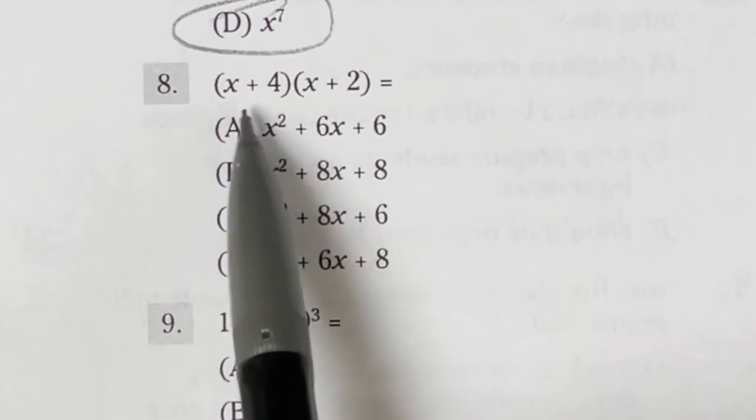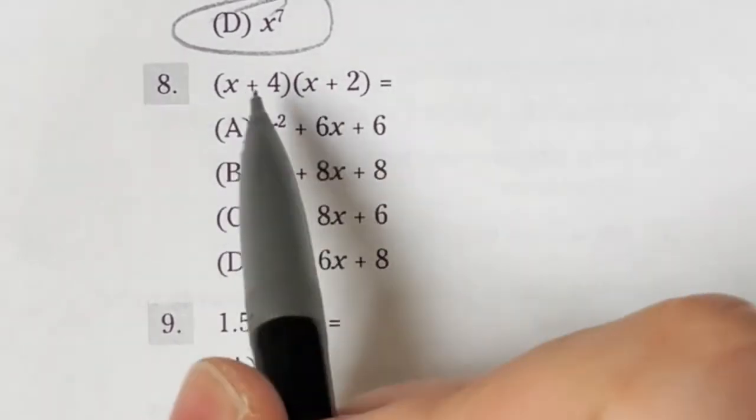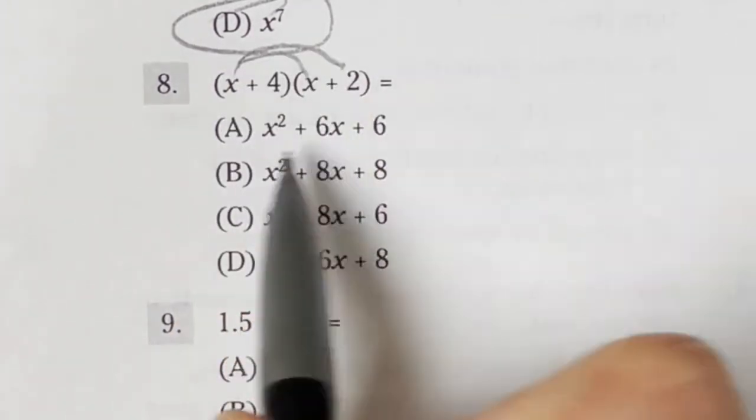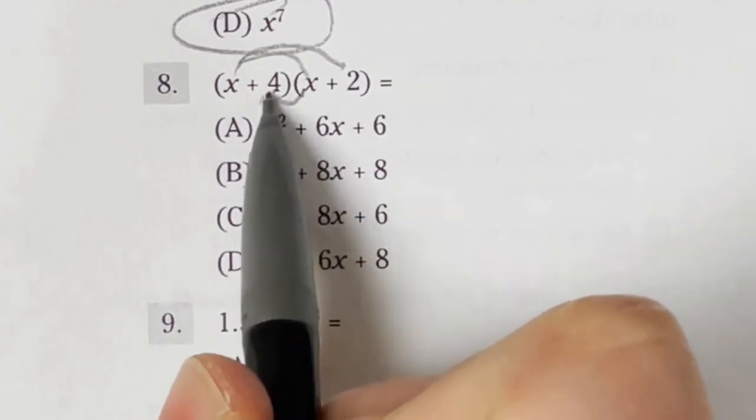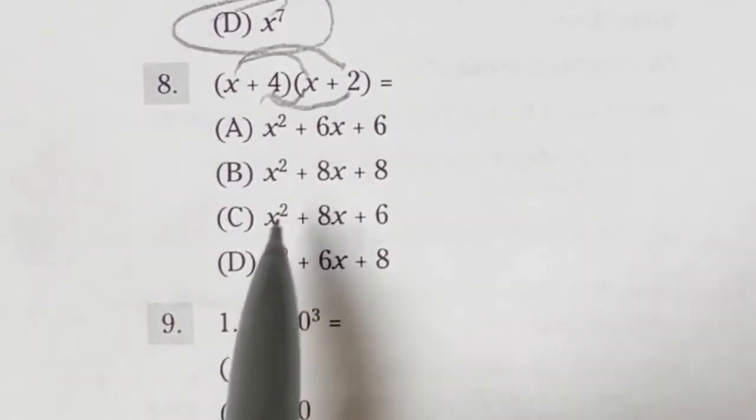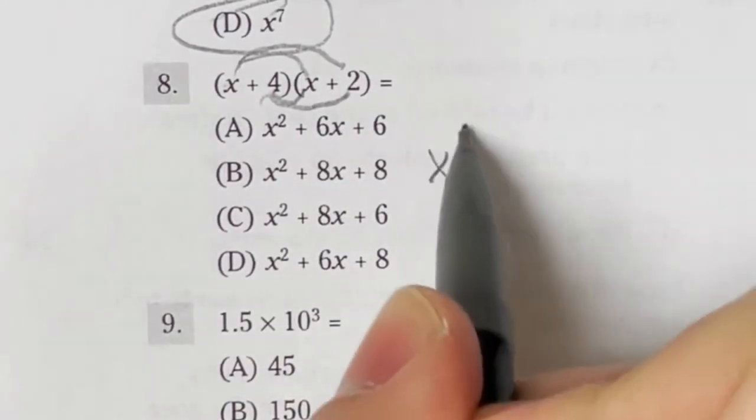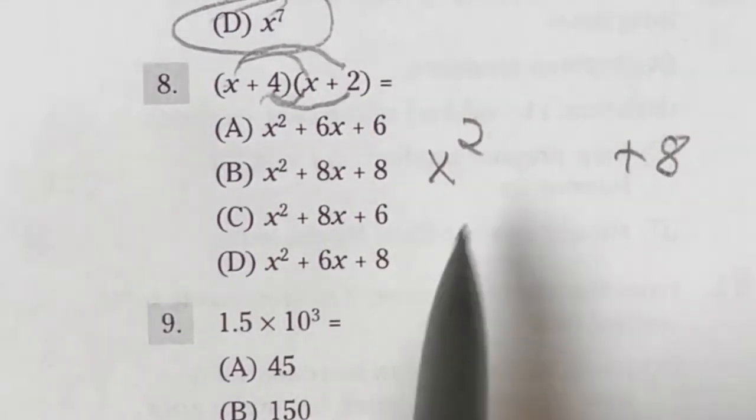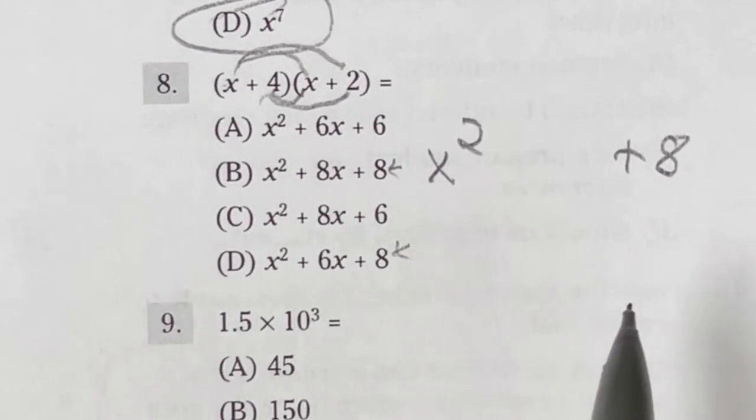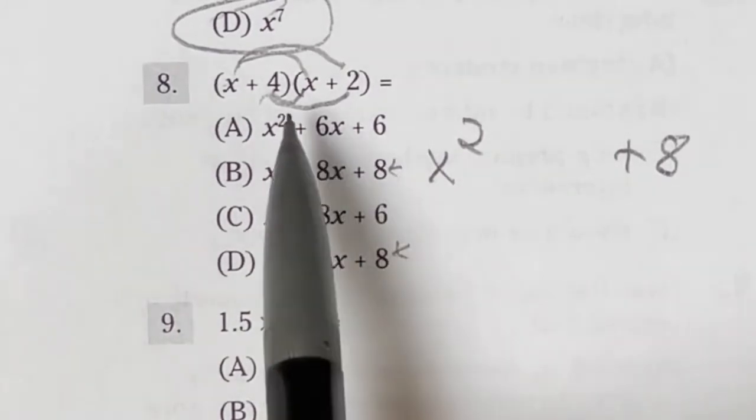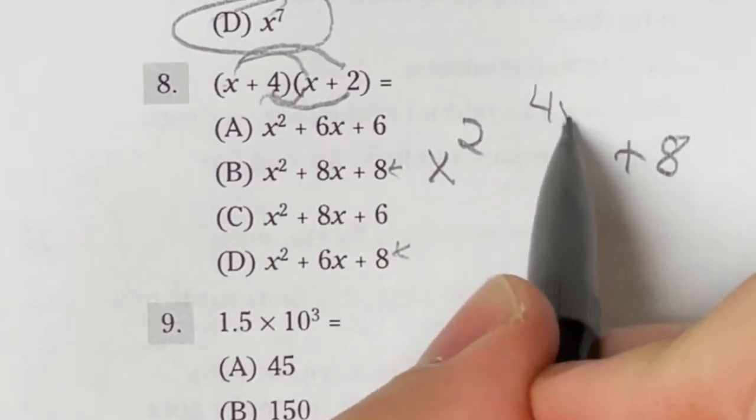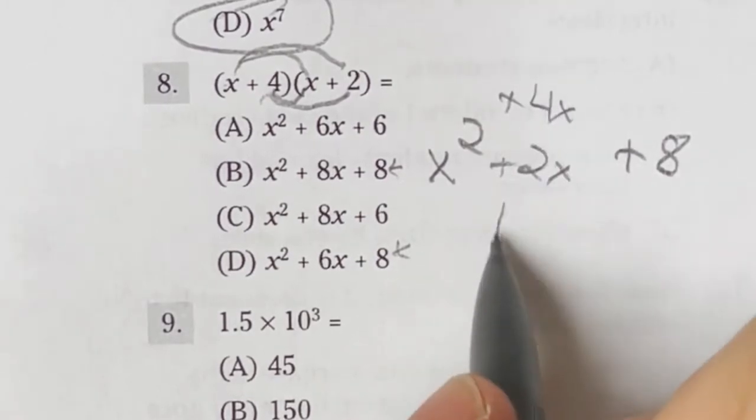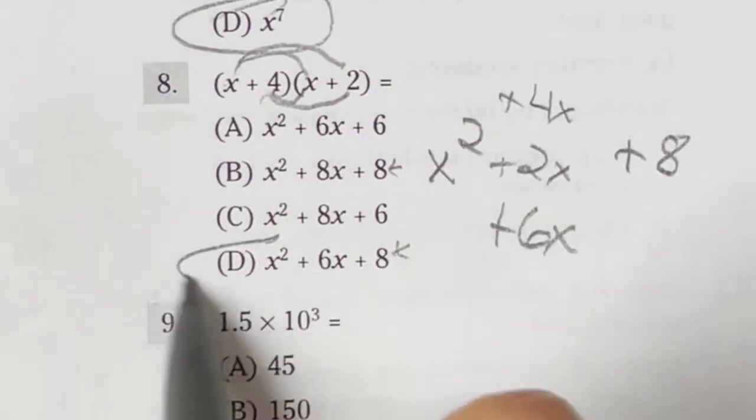Number 8 on the ASVAB is just asking you to distribute these guys out. Now I say distribute, some people know it as FOIL, but here's what we got to do. We got to do the first guy times the first one, first guy times the back one, back one times the first, back one times the back. And then we combine like terms and get all of our stuff here. Well, x times x right off the bat is going to give me x squared. And I know 4 times the 2 in the back is going to give me a positive 8. So that means we're already looking at either this guy here or this guy down here. Now from there, let's find that middle term. 4 times the x would give me 4x and 2 times that x would give me 2x. Now both of those are positive. So if we add those two together, that gives us a middle term of 6x, meaning our final answer here is D.